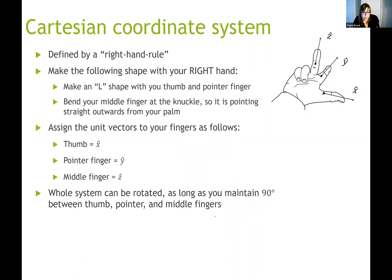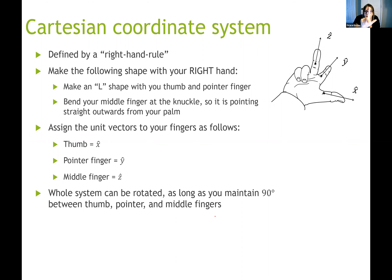The Cartesian coordinate system is defined by what we call the right-hand rule. This rule describes the directions of the three unit vectors defining the three dimensions. To perform the right-hand rule, hold up your right hand, make an L with your pointer finger and thumb, and bend your middle finger so it points straight outward from your palm. Lock in that shape.